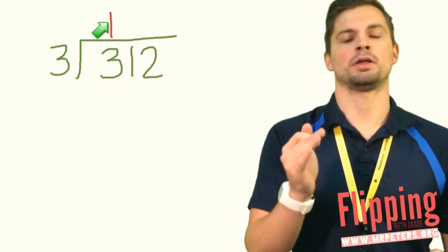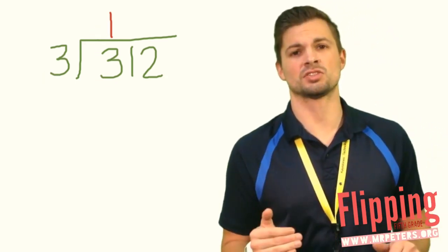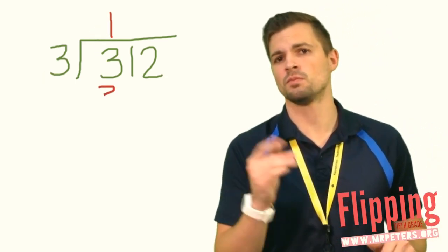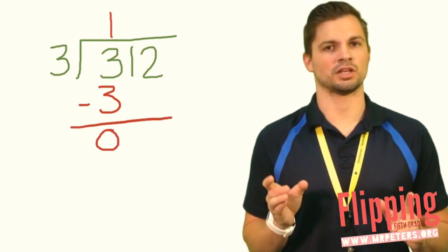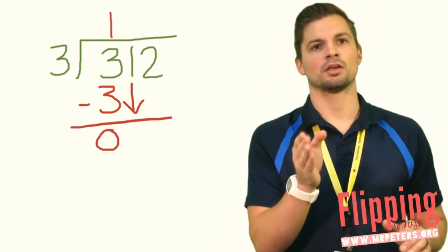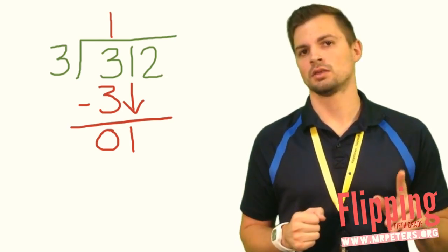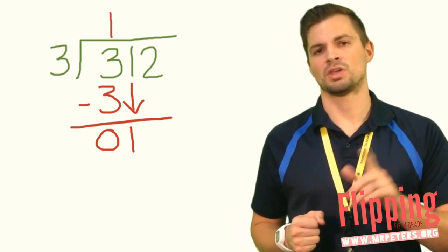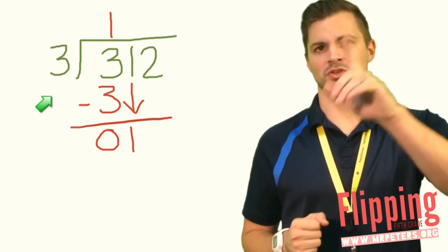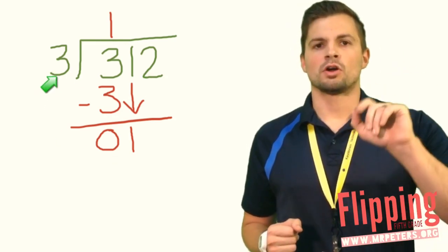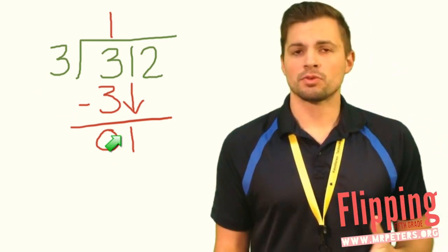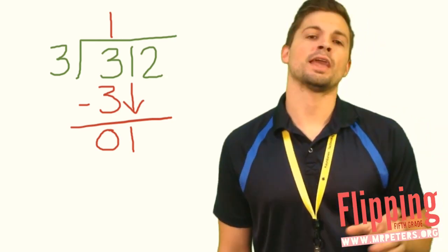Then we multiply. 1 times 3 is 3. So then we subtract. 3 minus 3 is 0. Last step, we bring down and check. Now, we can't stop there because we still have that 2 to deal with. Does 3, can you divide 1 by 3? No. You can't just move on.